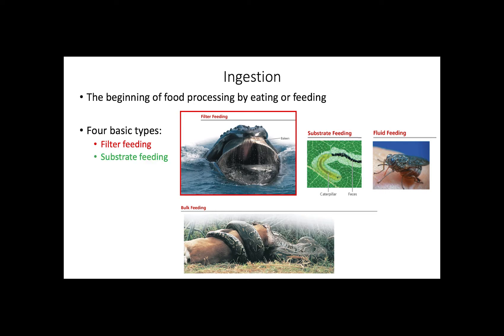Next, we have substrate feeding, which is present in animals that live on their food source, such as a caterpillar eating a leaf. Fluid feeding corresponds to the ability of sucking nutrient-rich fluids from a living host. Animals that have this type of feeding present specialized mouth parts resembling straws so that they can penetrate and obtain a liquid meal. Examples include mosquitoes, bees, and hummingbirds.